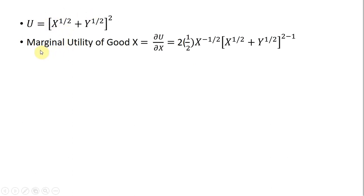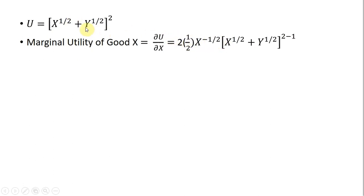The first thing we're going to do is get the marginal utility of good x and good y from it. So we're going to take the partial derivative of the utility function with respect to good x. First I bring down the 2 in front — that's where this 2 is coming from — and then in the exponent, 2 minus 1. The next thing I'm going to do is take the derivative of x to the 1 half, and that result is in front of the brackets here. I bring down the 1 half in front from this x, and then x raised to the 1 half power minus 1 leaves us x raised to the minus 1 half power.